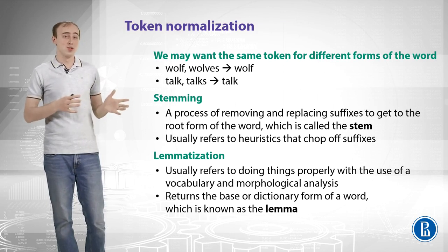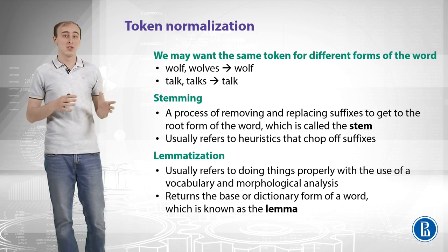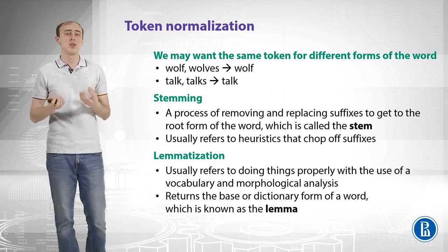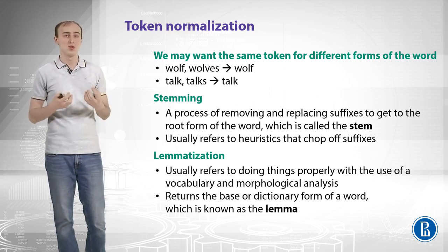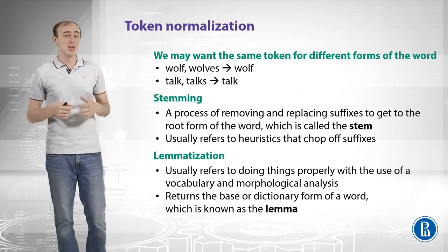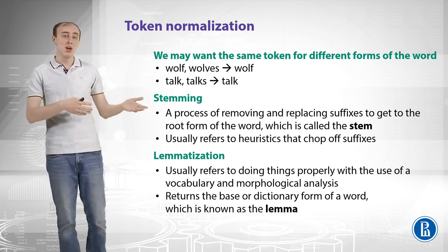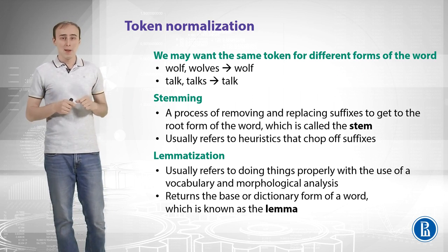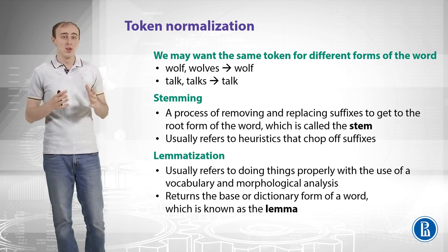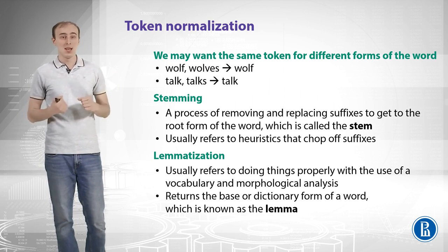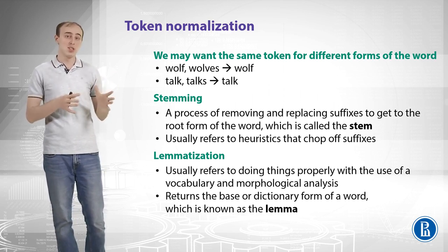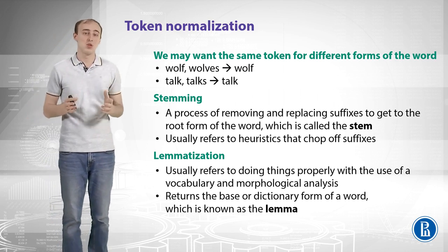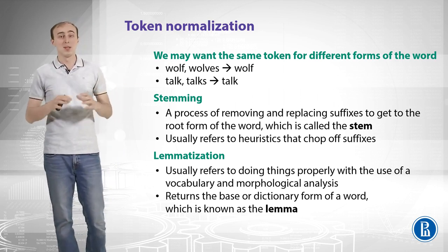The next thing you might want to do is token normalization. We may want the same token for different forms of the same word — for example, 'wolf' and 'wolves' refer to the same thing and we want to merge them into a single token 'wolf'. Similarly, 'talk', 'talks', and 'talked' are all about 'talk' and we may not care about the ending. The process of normalizing words is called stemming or lemmatization. Stemming is the process of removing and replacing suffixes to get to the root form of the word, called the stem, typically using heuristics that chop off or replace suffixes.